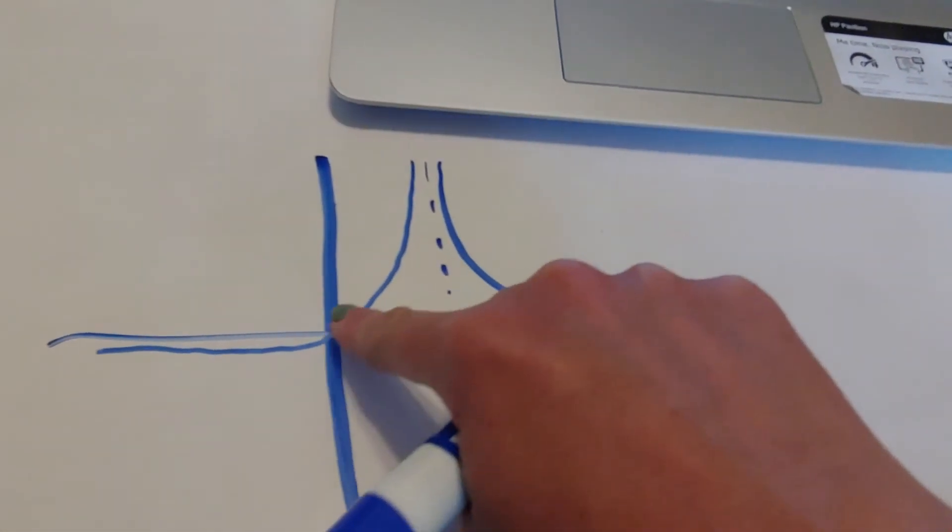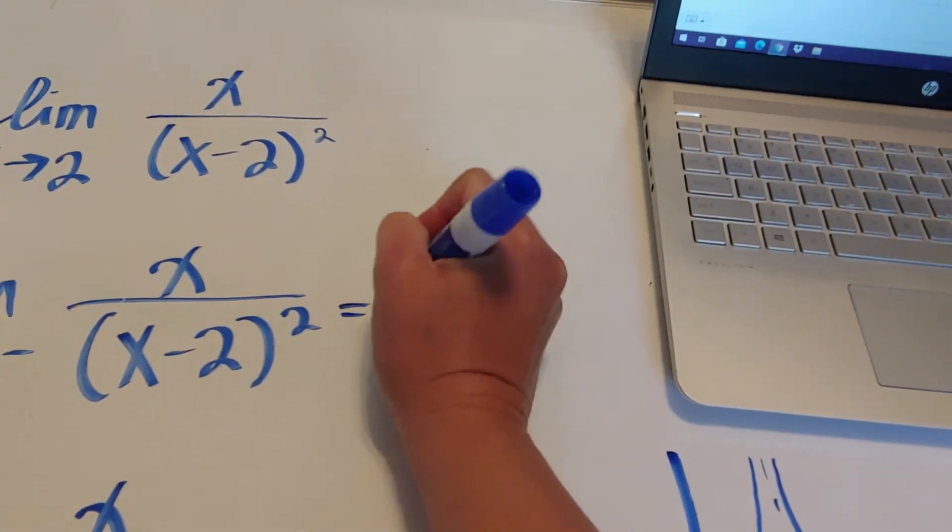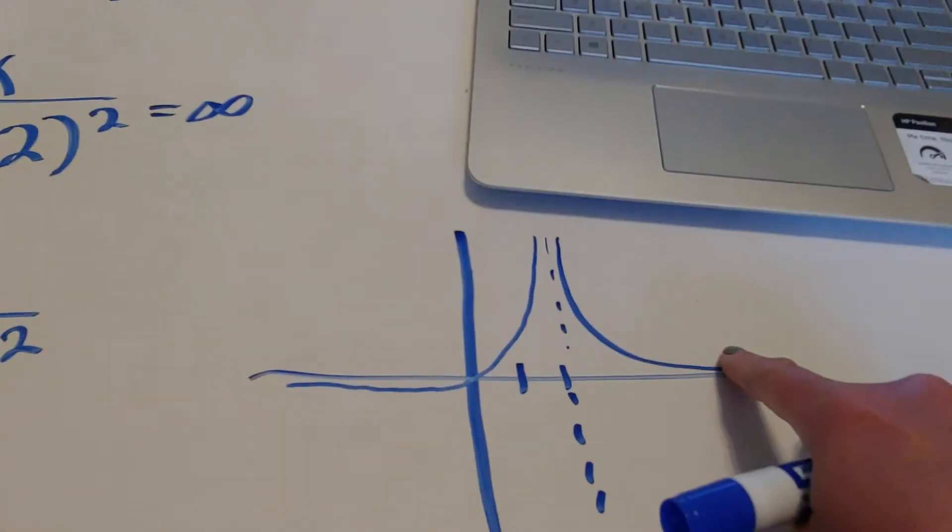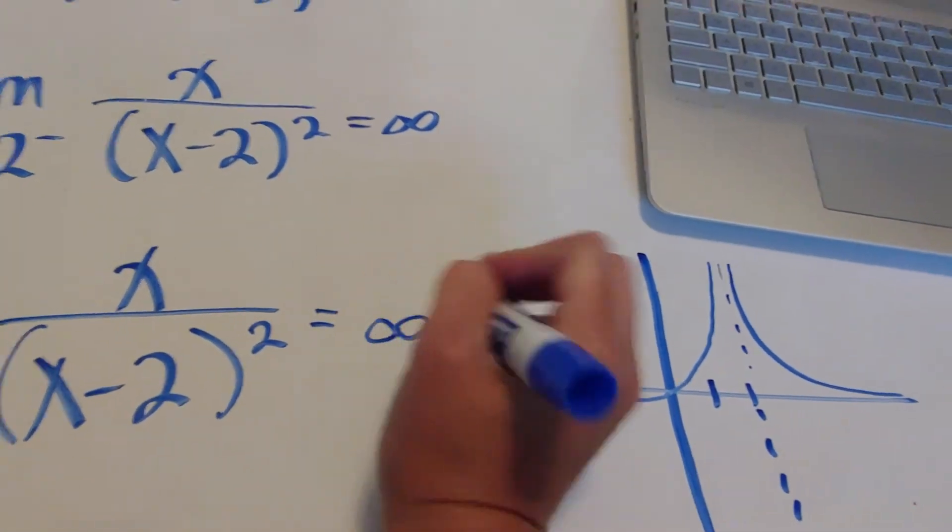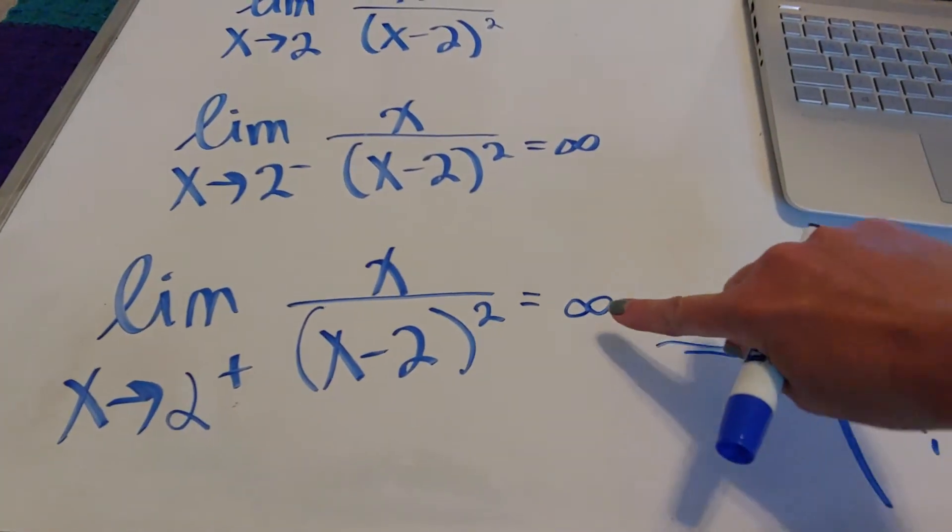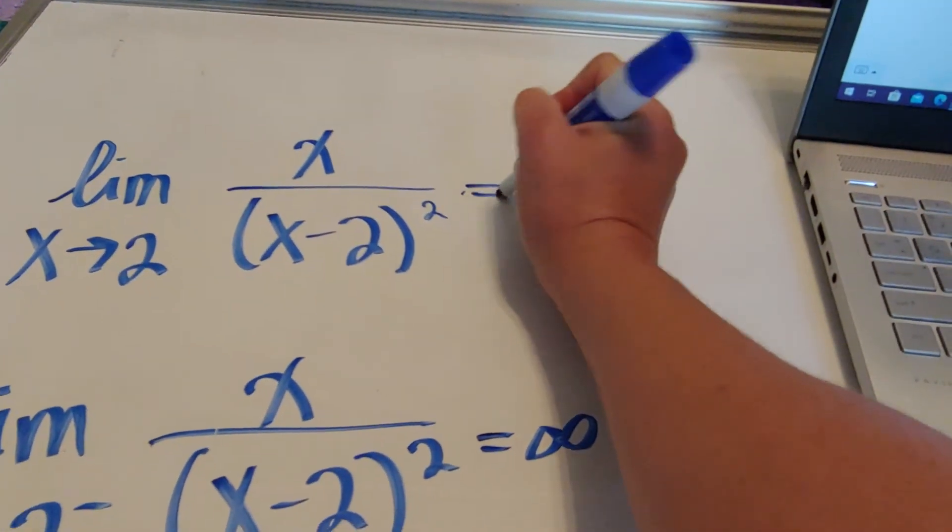So what I'm going to do is, as I'm approaching from the left, I'm going up to positive infinity. As I'm approaching from the right, I'm also going up to positive infinity. So there's my left-handed, there's my right-handed. They are the same type of infinity, so we say that our answer is infinity.